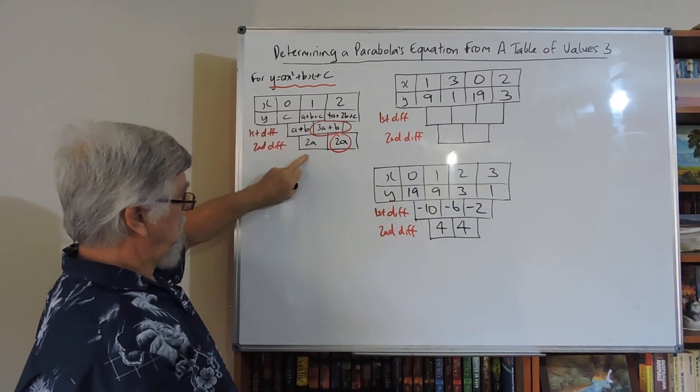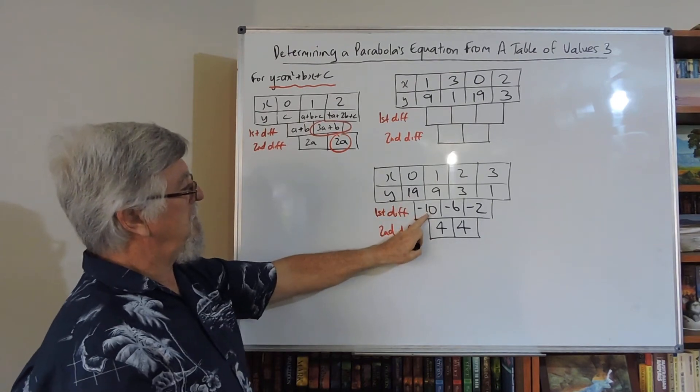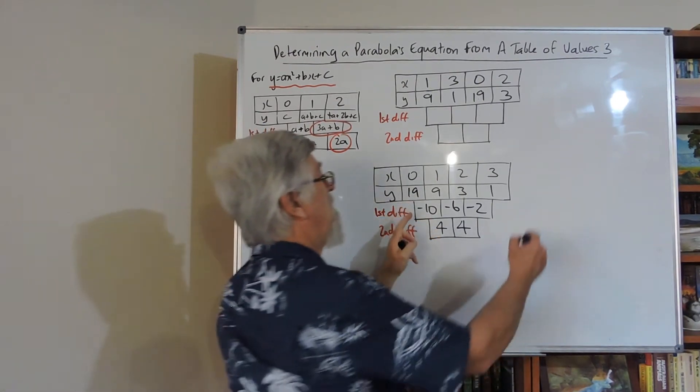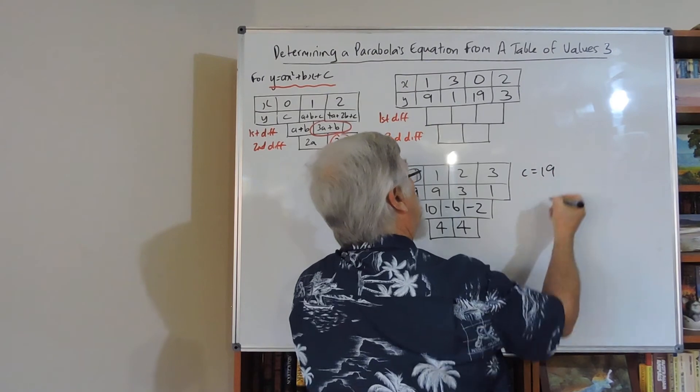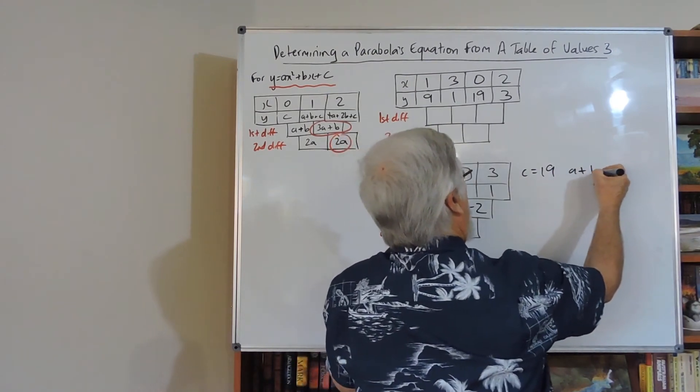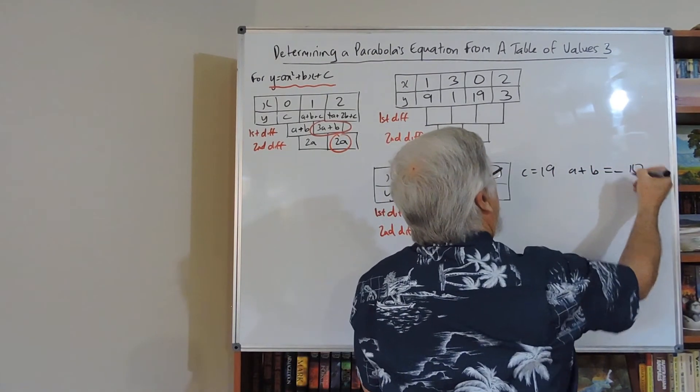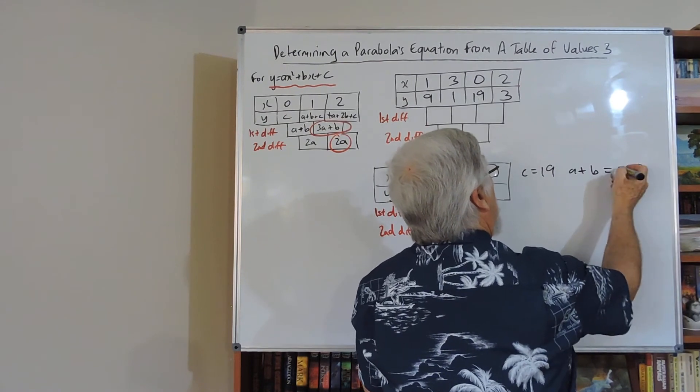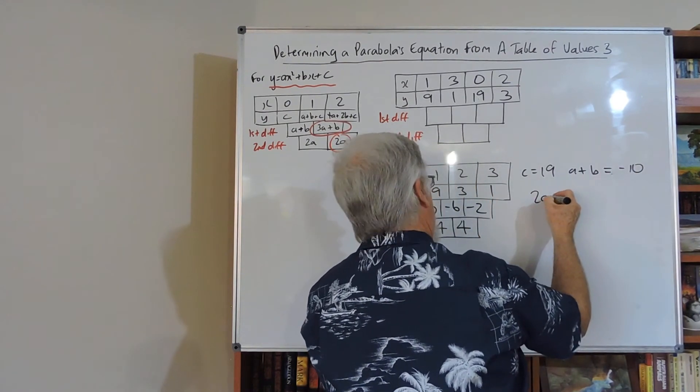There's C, there's A plus B, there's 2A. So there's C, there's A plus B, there's 2A. So C equals 19, A plus B equals minus 10, and 2A equals 4. So that's the obvious one.